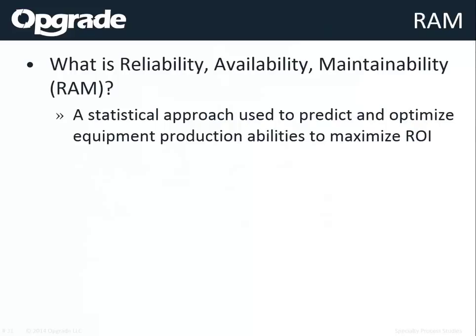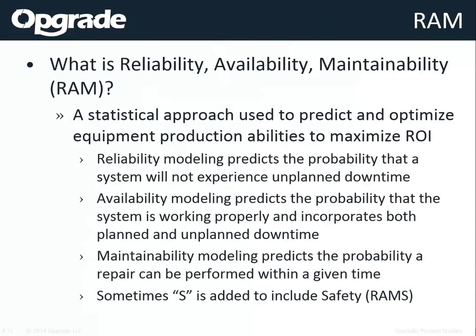Reliability is whether things are operational or not from an unplanned perspective. Availability takes that number and also adds in scheduled maintenance activities and other things that would prevent it from being operational. Maintainability is whether you can get in there and perform your maintenance activities and turnarounds in a given amount of time.